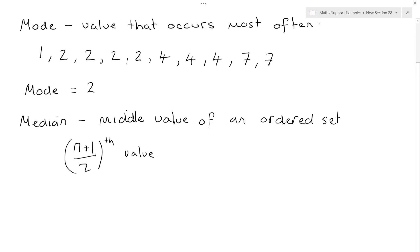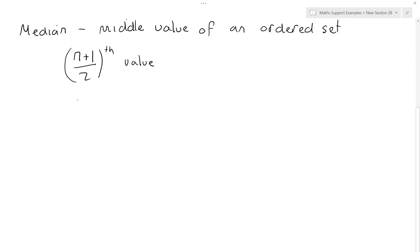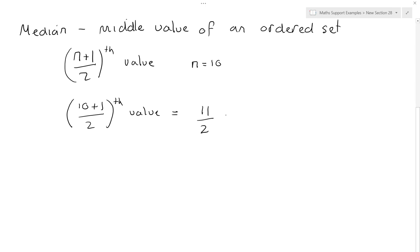To calculate the median value, we look at the n plus 1 over 2 value, where n is the number of data points we have. We have 10 data points, so n is 10. So the median term is going to be 10 plus 1 over 2, which is 11 over 2, which is the 5.5th value.